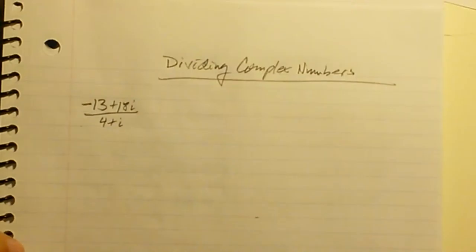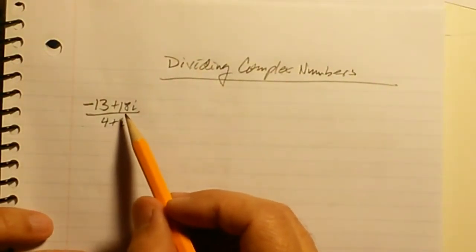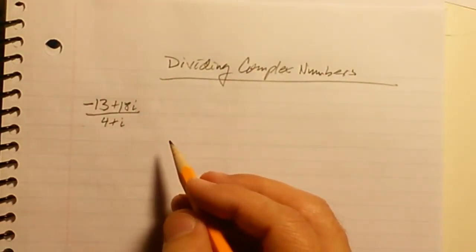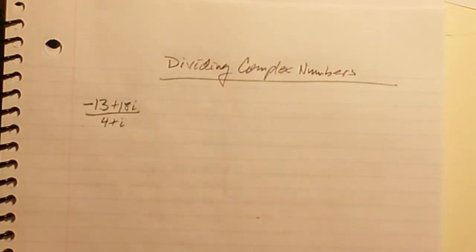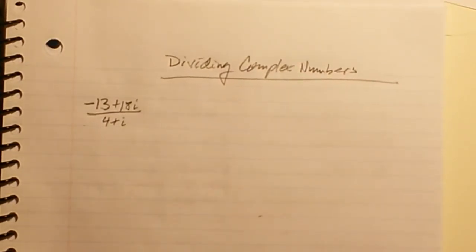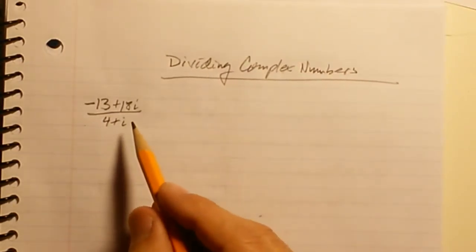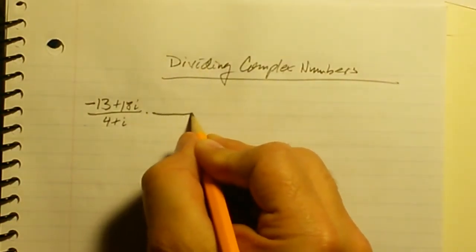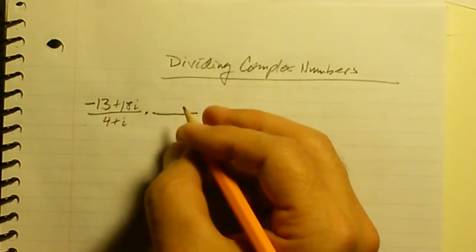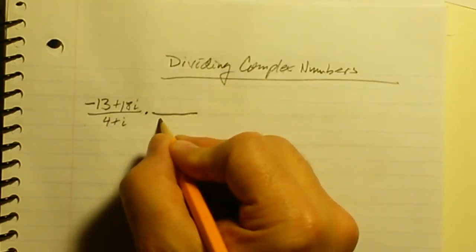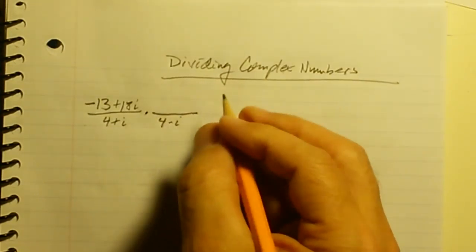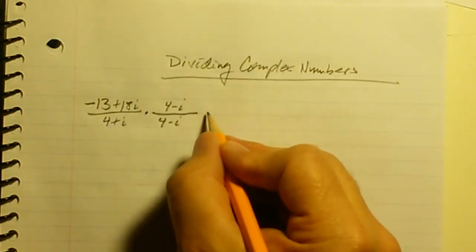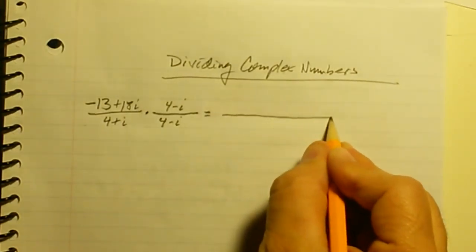Now let's use this to solve our original problem: negative 13 plus 18i divided by 4 plus i. What I'm going to do is multiply both the numerator and the denominator by the conjugate of the denominator, so I'm going to multiply by 4 minus i over 4 minus i.